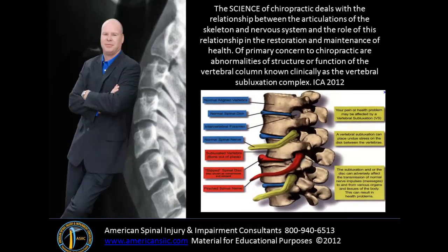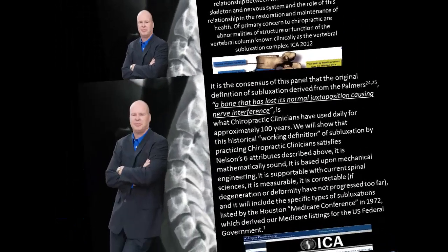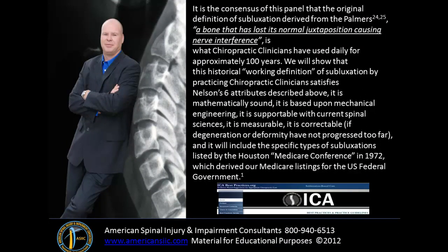The science of chiropractic deals with the relationship between the articulations of the skeleton and the nervous system and the role of this relationship in the restoration and maintenance of health. A primary concern to chiropractic are the abnormalities of structure or function of the vertebral column known clinically as a vertebral subluxation complex — from the International Chiropractic Association 2012. The panel consensus is that the original Palmer-derived definition — a bone out of place that has lost its normal juxtaposition causing nerve interference — is what chiropractic clinicians have used daily for approximately 100 years, and it is the most accurate definition there is.